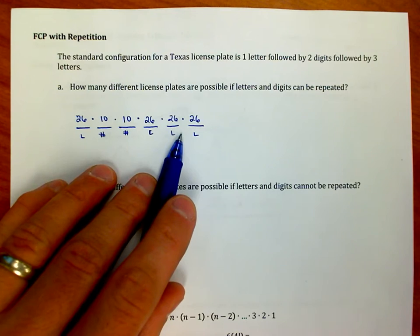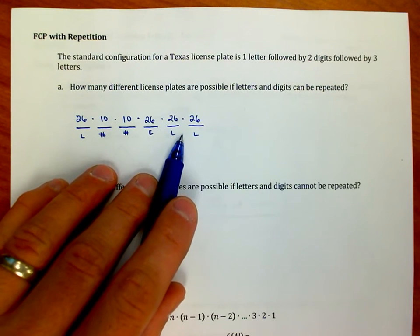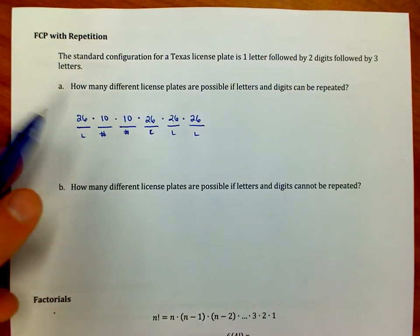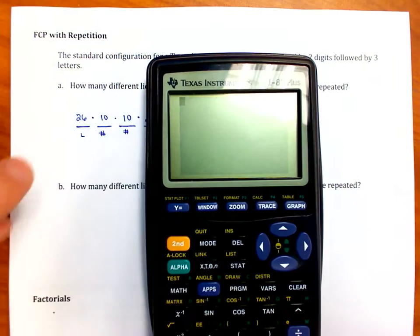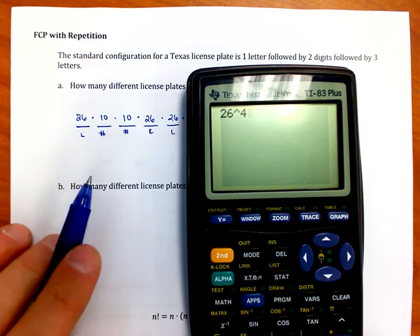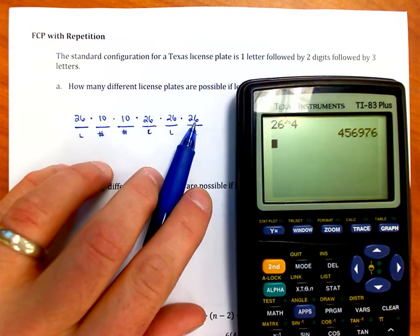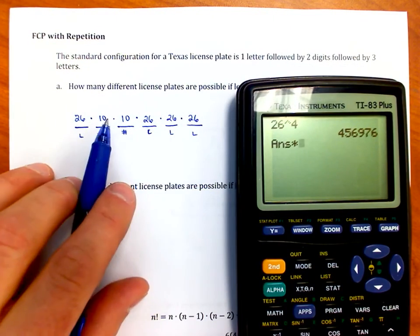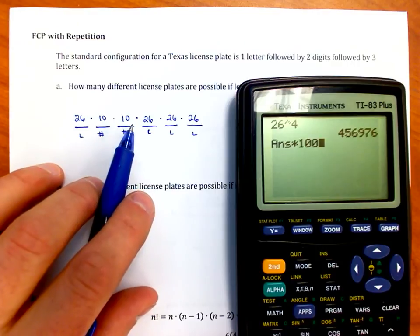It should be a big number by the way because there are a lot of people in Texas that are driving a lot of vehicles, but it tells me how many choices I have overall. So I'm going to take 26, I'm going to raise it to the fourth power because that gives me my four 26's, right? One, two, three, four.